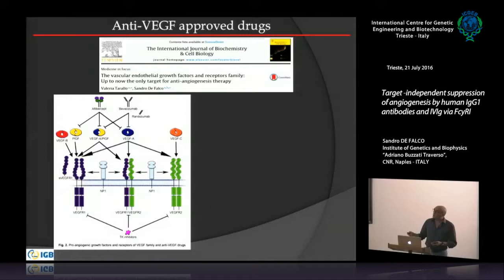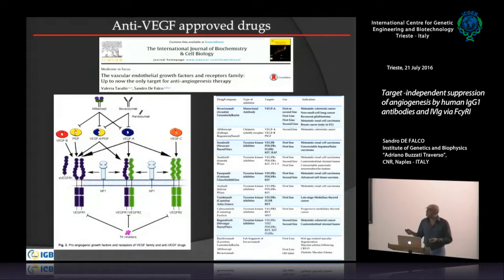We have a monoclonal antibody, bevacizumab or Avastin, that blocks VEGFA. The Fab fragment derived from this antibody, ranibizumab, is used exclusively for ocular disease. The most recent biological drug is aflibercept, a recombinant protein formed by domain 2 of receptor 1 and domain 3 of receptor 2, fused to the Fc of IgG1, able to block VEGFA, PLGF, and VEGFB. Bevacizumab and aflibercept are used in cancer.